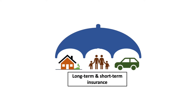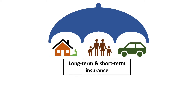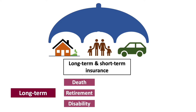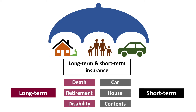Next, we have long-term and short-term insurance products. Long-term insurance products cover lasting events in life like death, retirement and disability. A good example of a long-term insurance product is a life cover that pays out when a client passes away, retires or becomes disabled and can no longer work. Short-term insurance products cover personal possessions or assets on a short-term basis, such as a car or a house and its contents.